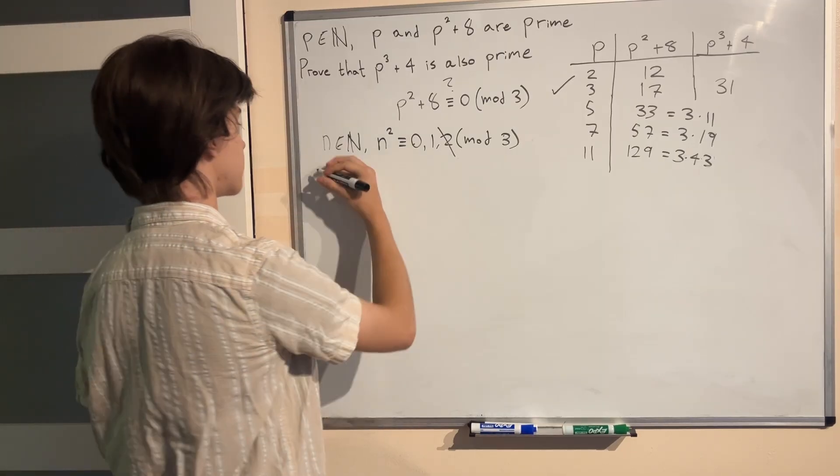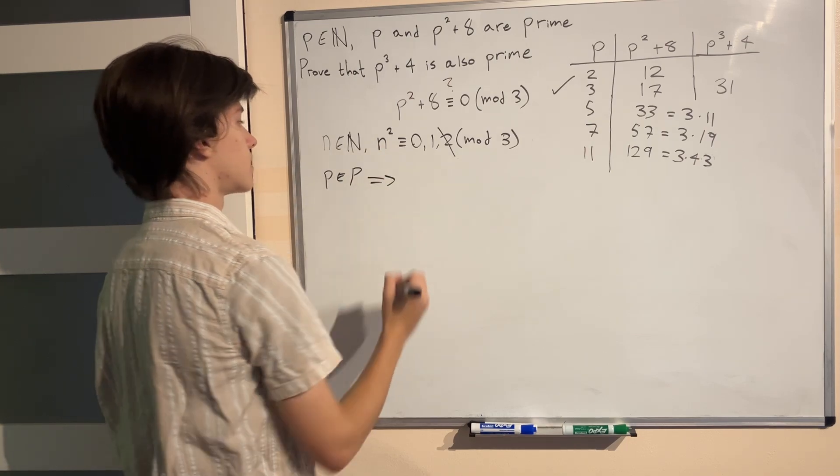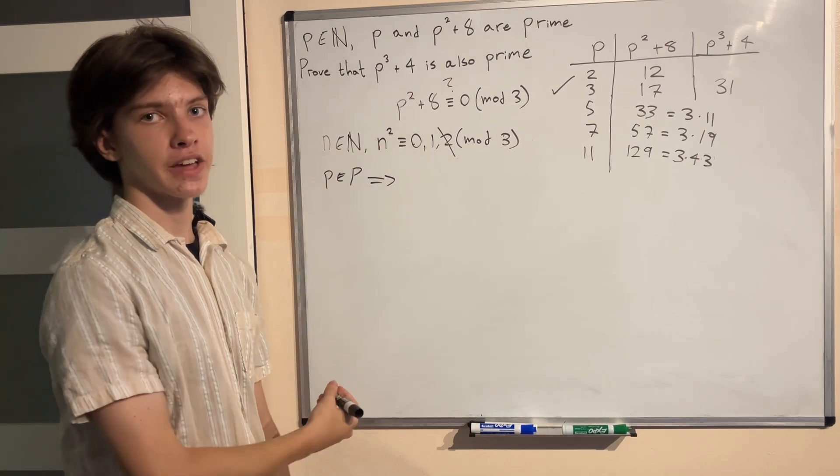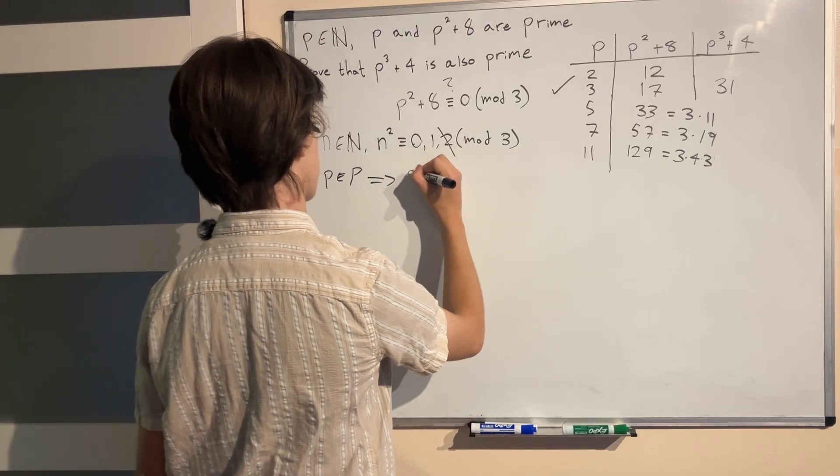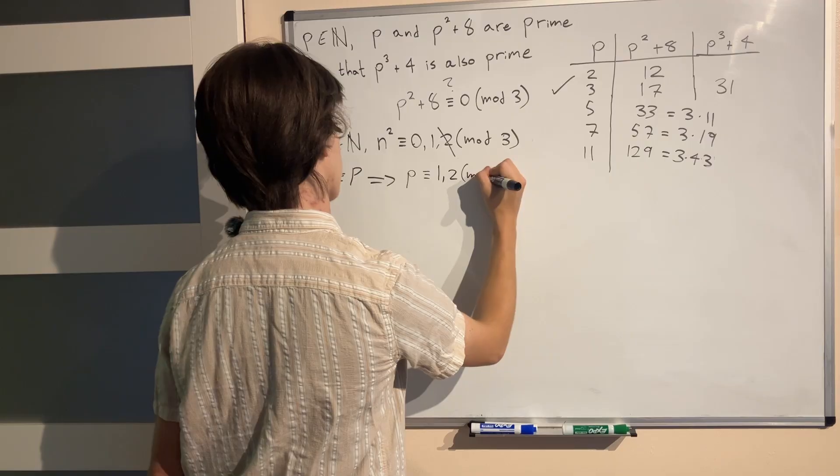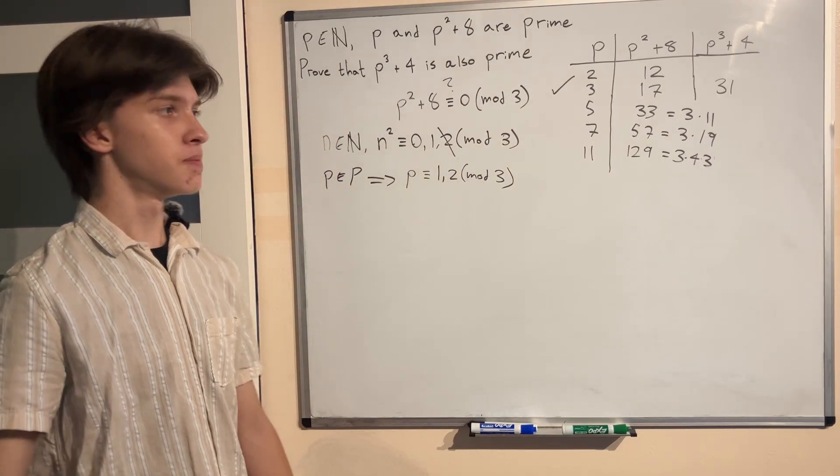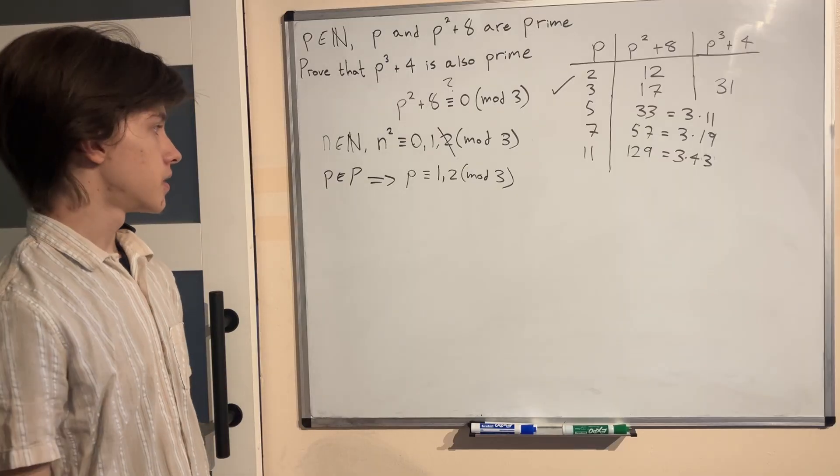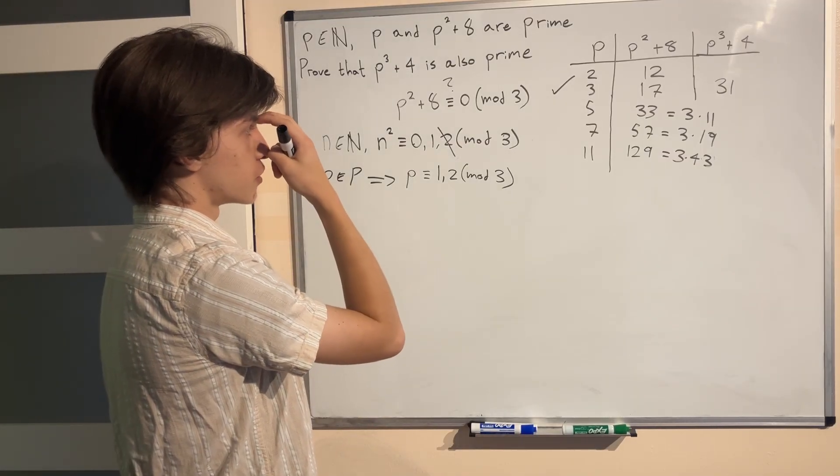Because again remember that p is a prime number. That means that p itself cannot be congruent to 0 mod 3. p can only be congruent to 1 or 2 mod 3 possible. Because if p is congruent to 0 mod 3 it is divisible by 3 and it is no longer prime.